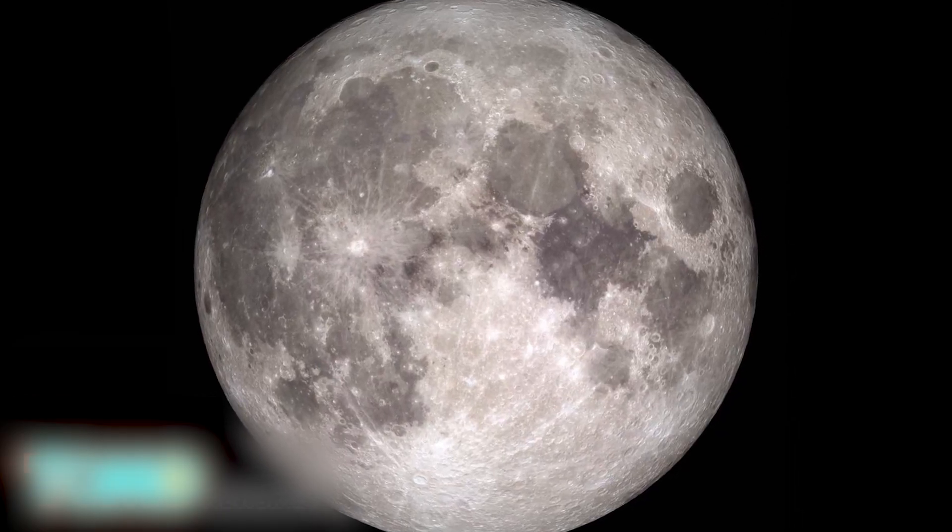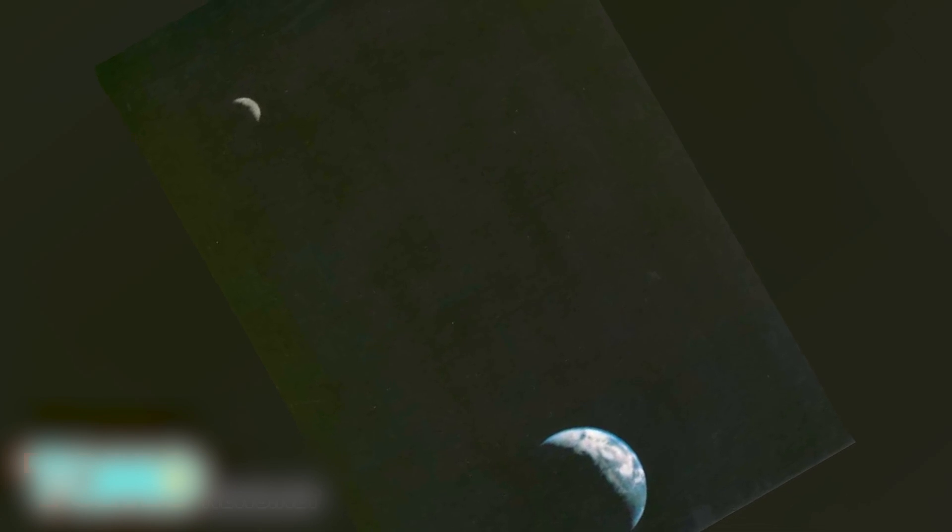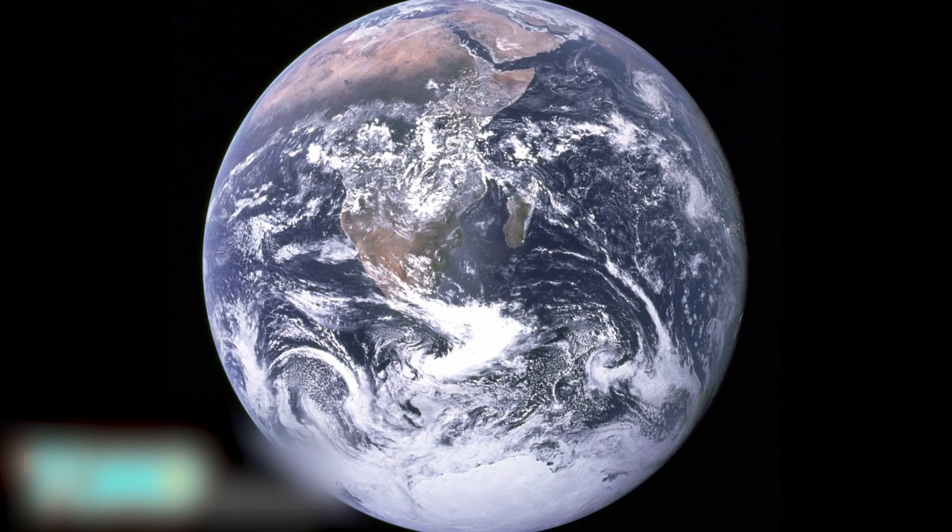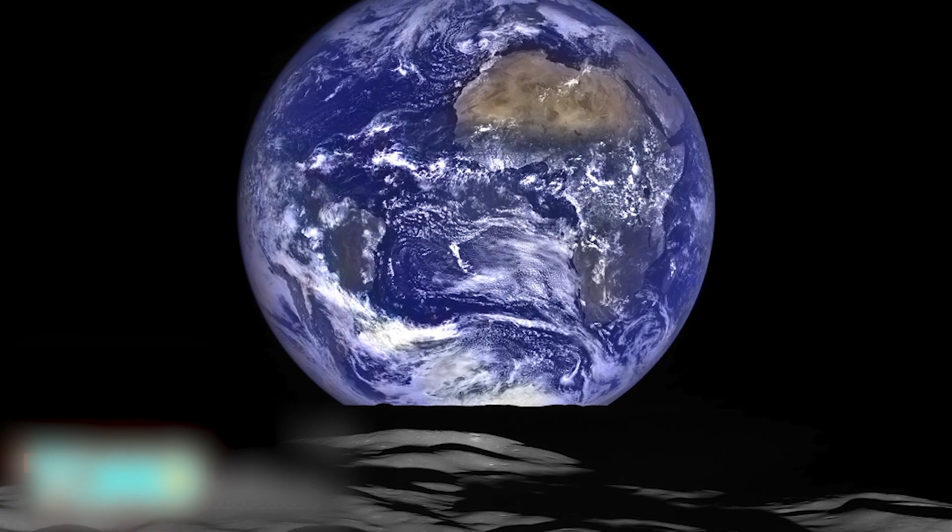Apollo 10 didn't land, its mission was to orbit the Moon, and that meant going over to the dark side. For over an hour, the astronauts were invisible and inaudible to Houston as they went around the far side of the Moon. But while mission control couldn't hear anything during that hour or so, the guys on the spacecraft heard a lot.